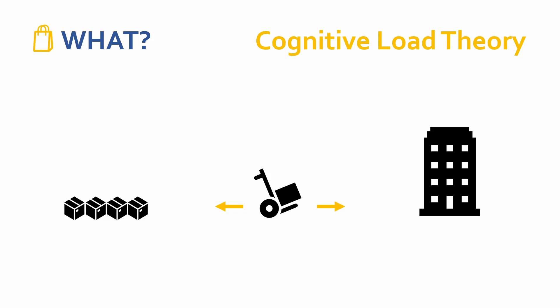Now, in this analogy, the storage unit is my long-term memory. To all intents and purposes, it has an infinite storage capacity. And the trolley is my working memory — it definitely does have a limited capacity. So if I'm going to fill my long-term memory store with the elements that I'm trying to learn, I need to use my working memory as efficiently as possible.